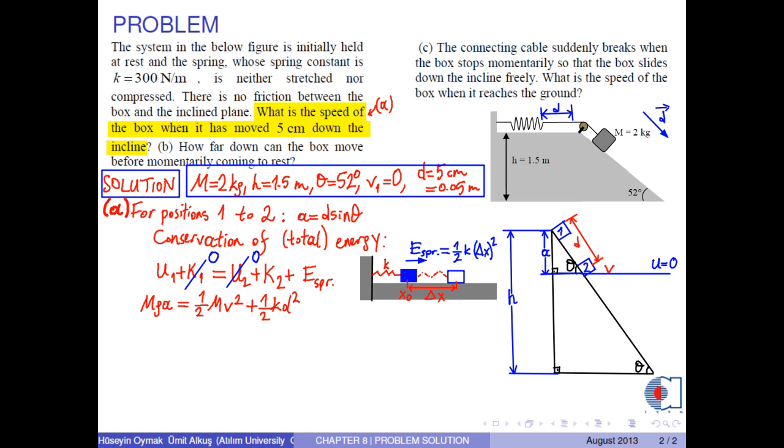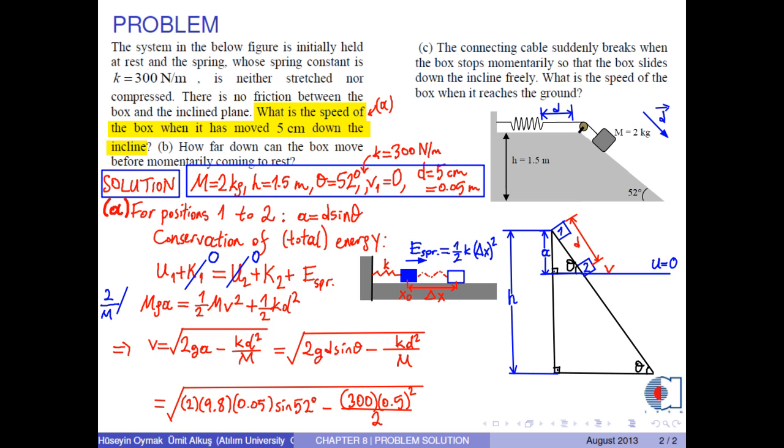From this equation we can have an expression for the speed at point 2. Here A is equal to D times sin θ. Now we substitute the numerical values into this equation. Therefore, we obtain approximately 0.63 m per second.